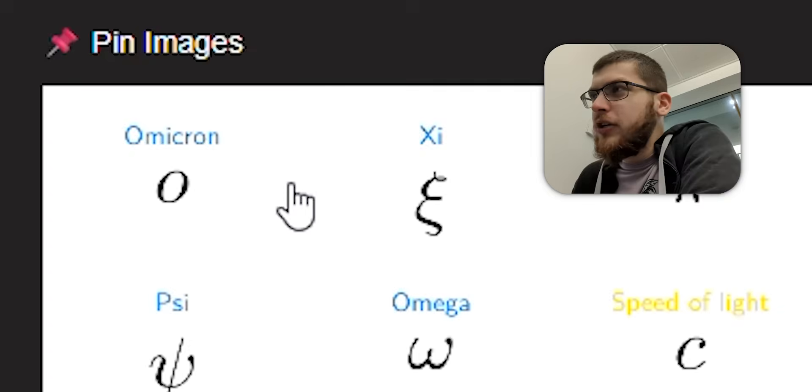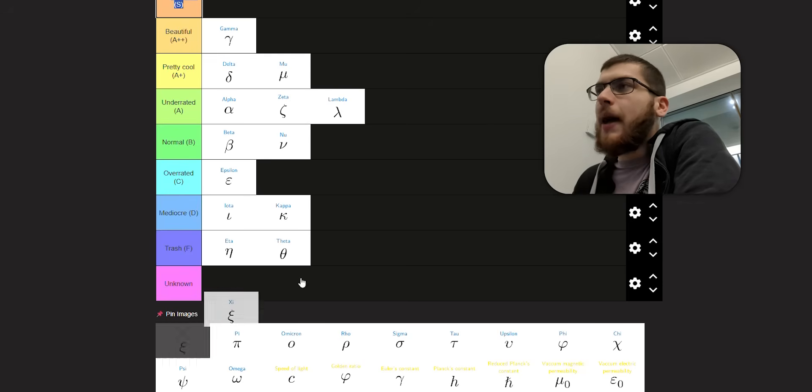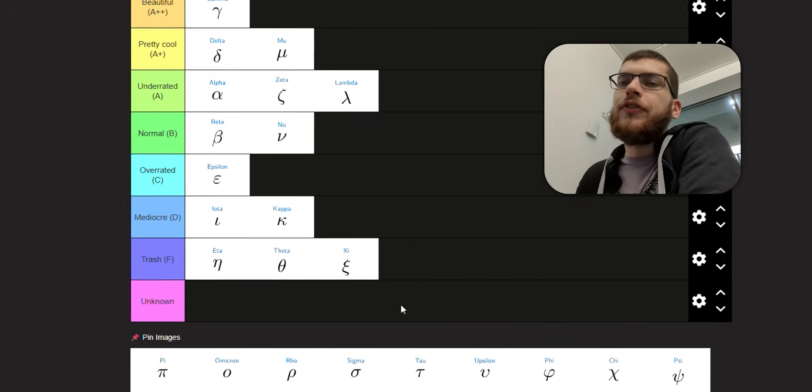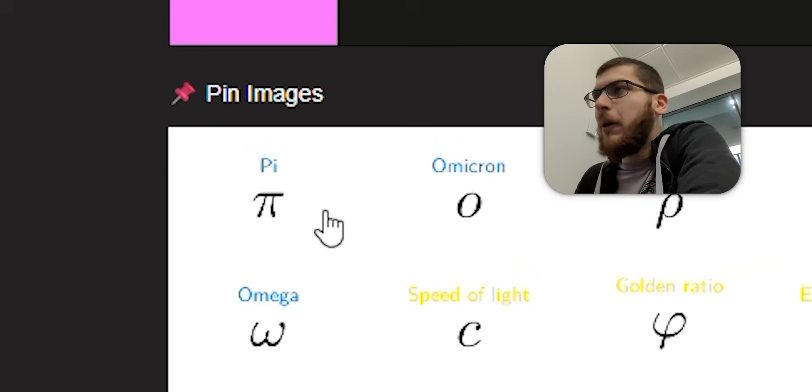Next, we've got xi. You use this in like physics when you're dealing with certain permittivities, I think. Actually, I'm thinking epsilon. It's such a bad, terrible symbol that it can very easily be confused with epsilon. And it's also terrible to write. So if there was a tier below trash, xi would be in that tier. And it's not even easy to say, xi.